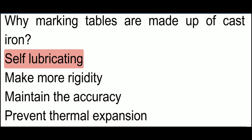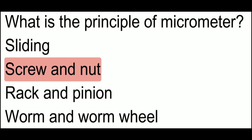Why are marking tables made up of cast iron? The marking table is made of cast iron because cast iron has a property of being self-lubricating. Due to this self-lubricating property, marking tables are made from cast iron.